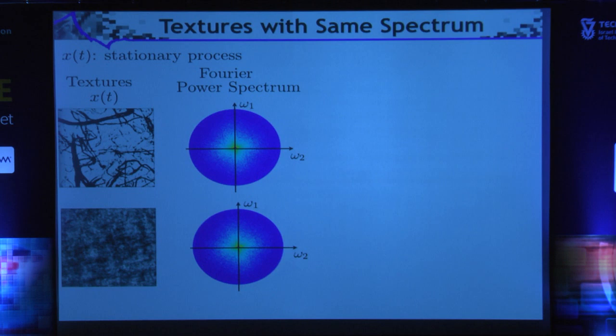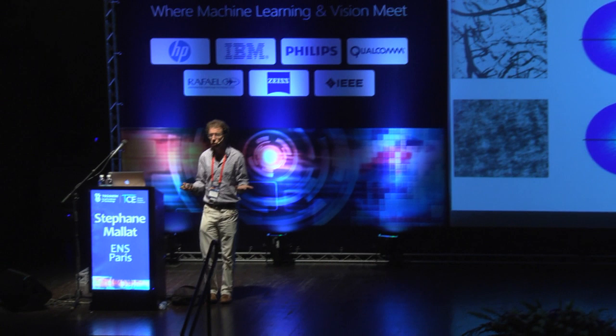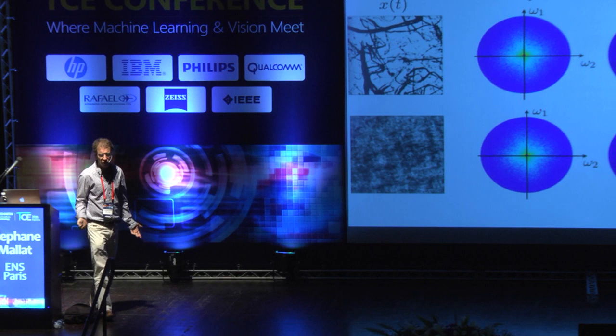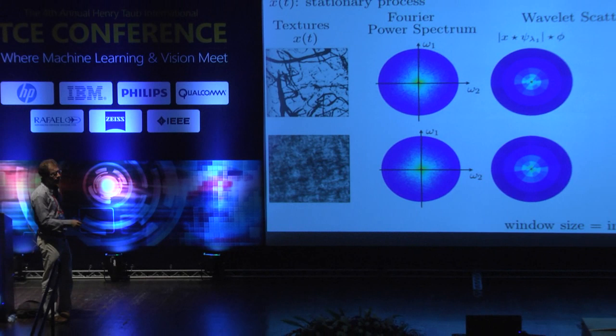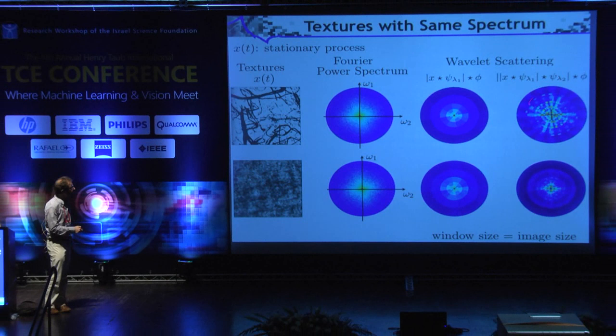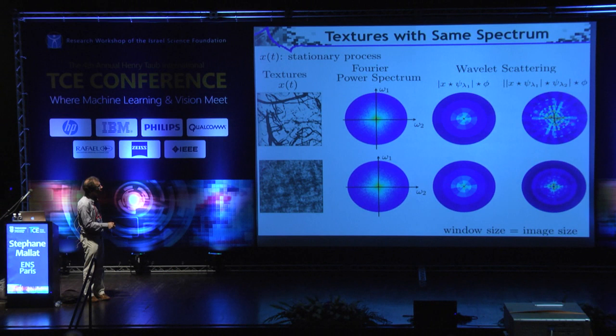For textures: two textures with exactly the same second-order moment — their Fourier power spectrums are identical by design. First-order scattering coefficients, similar to Fourier, are also identical. But second-order coefficients are totally different because one texture is much more sparse than the other, and this sparsity appears through the second-order coefficients. This demonstrates the need to go deeper in the network.